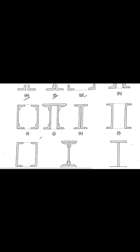The important point to remember is the necessity of built-up sections: when a standard cross-section is not sufficient to carry a particular load, we go for built-up sections. In designing them, we can modify the radius of gyration, which ultimately modifies the slenderness ratio. If we increase the radius of gyration, we reduce the slenderness ratio and get higher load-carrying capacity.